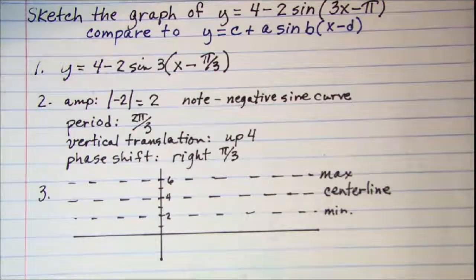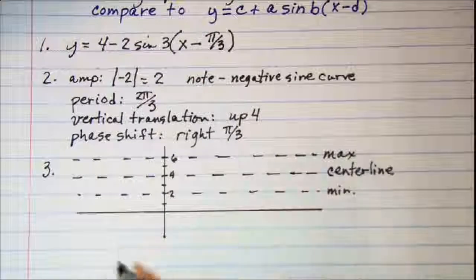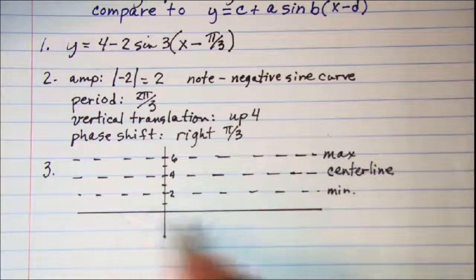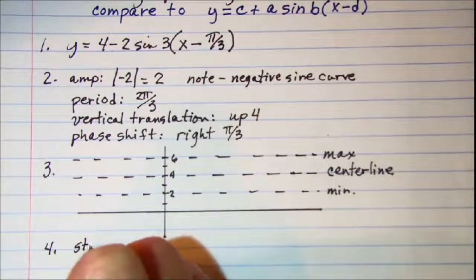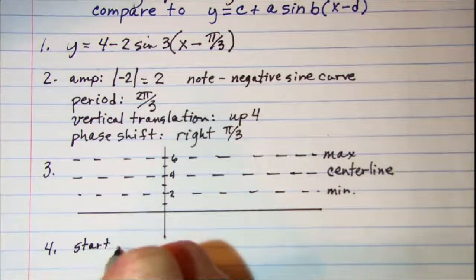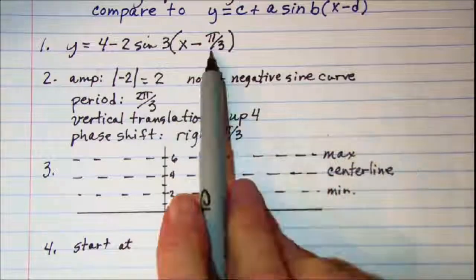And our next step is to find the beginning value on the x-axis. So we will be starting at pi over 3.